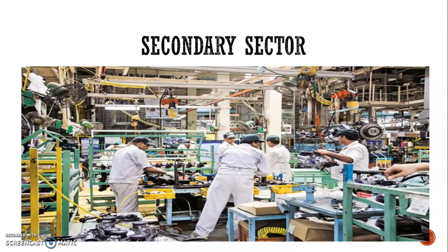Next would be the secondary sector, the part of a country's economy that is concerned with the manufacturing and processing of goods. It uses the products of the primary industry either directly or indirectly. For example, coal, iron ore and lime are used directly to make steel.